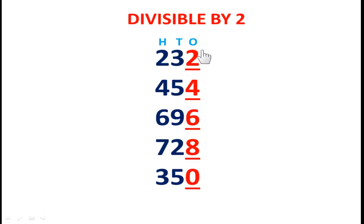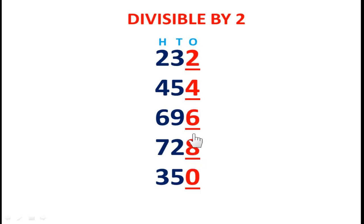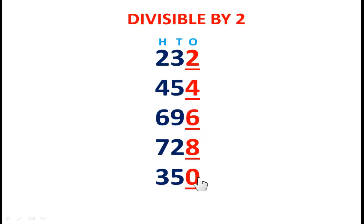For 232, the ones place digit is 2, so the total number is divisible by 2. For 454, the ones place digit is 4 — divisible by 2. For 696, the ones place is 6 — also divisible by 2. For 728, the ones place is 8. And 350 has ones place digit 0, so 350 is also divisible by 2.